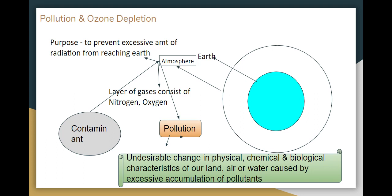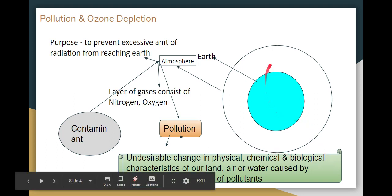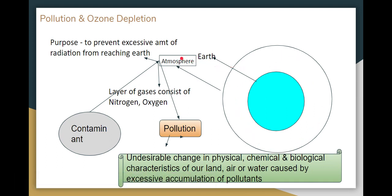So, what is the introduction to pollution and ozone depletion? Here is the layer of air — the atmosphere. The atmosphere protects against excessive radiation, reducing the amount of radiation that reaches us. The layer of air in the atmosphere consists of nitrogen and oxygen, forming the composition of the atmosphere.